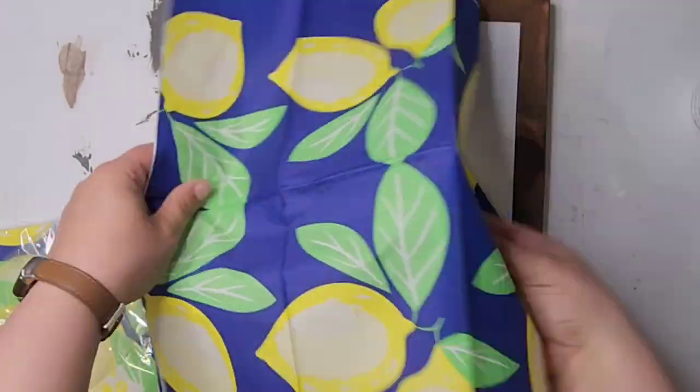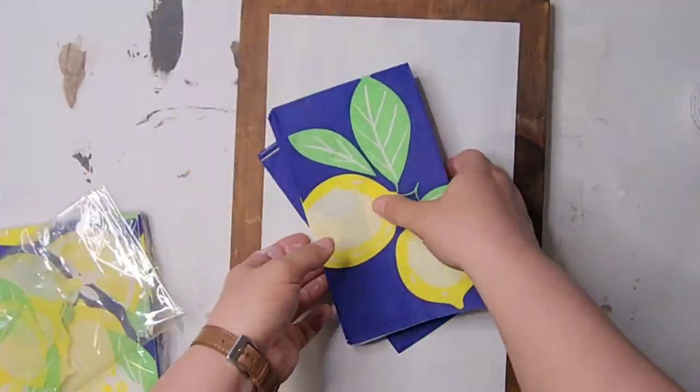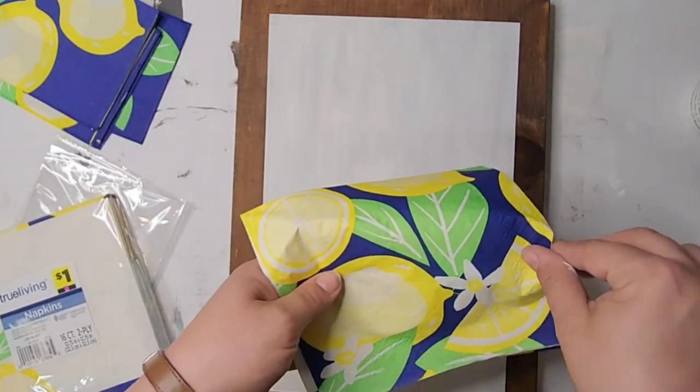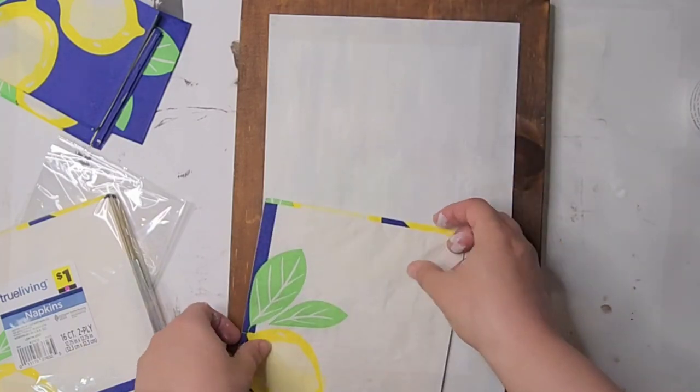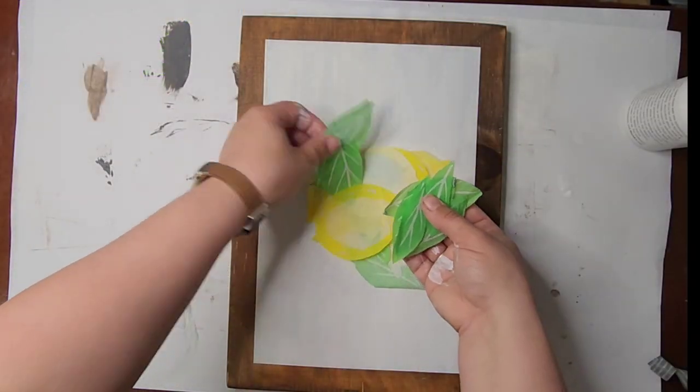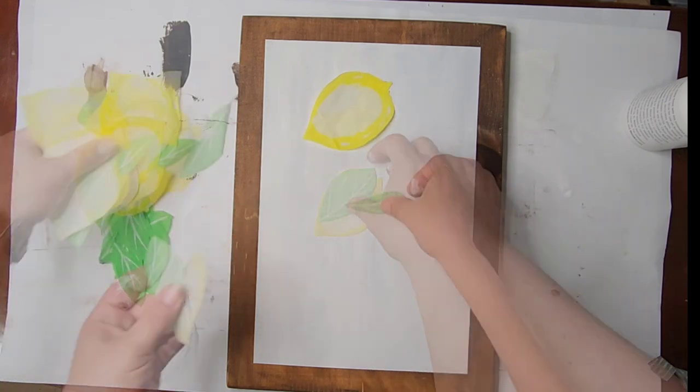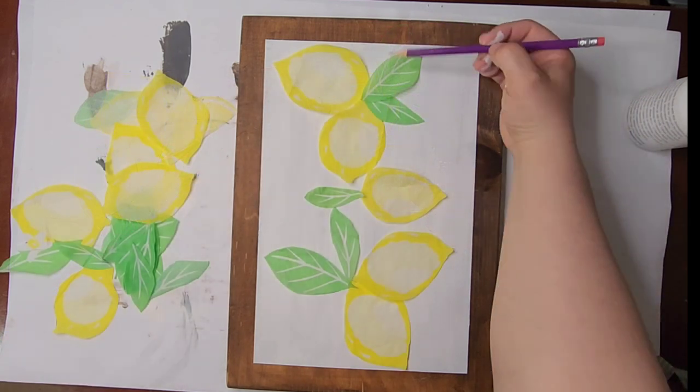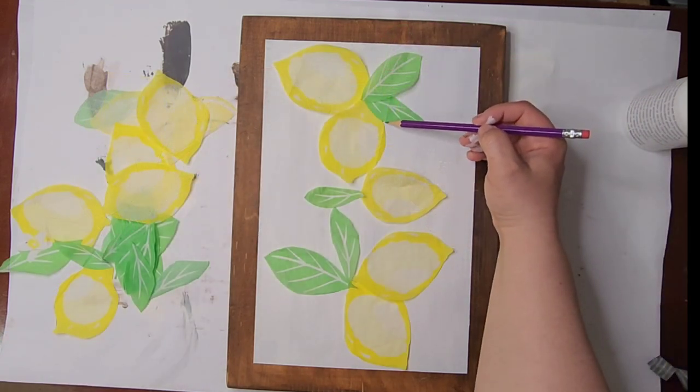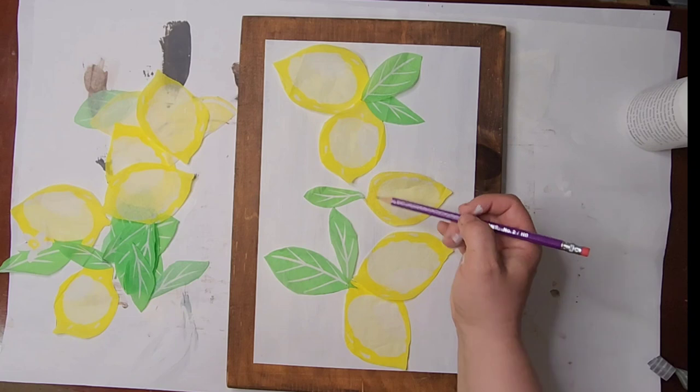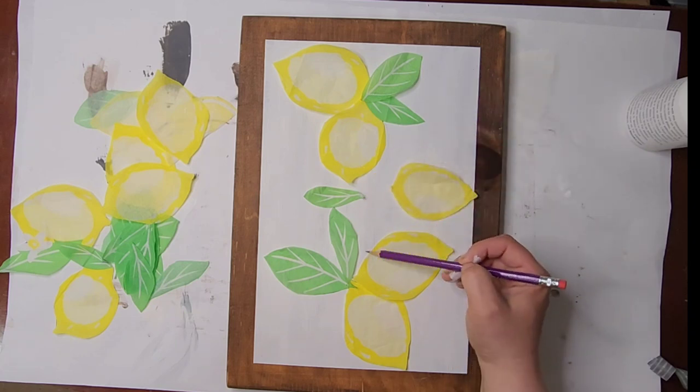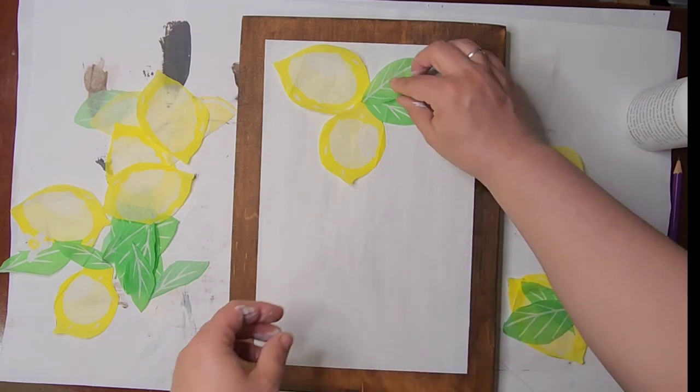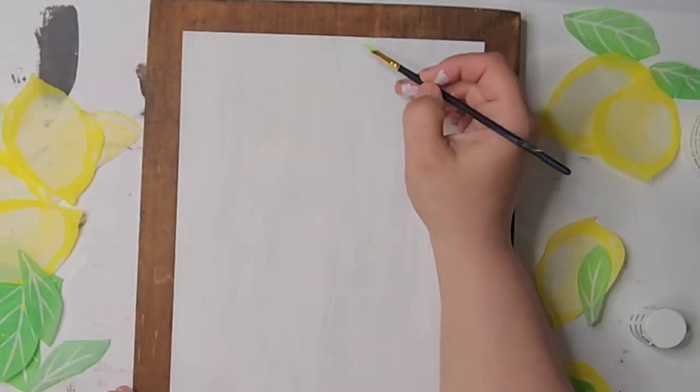I picked up these beautiful lemon napkins at Dollar General. This set was two dollars and this set is a dollar. I went ahead and cut those lemons out and the leaves, and I am now just going to place them on there how I like them. Coming back in with my pencil, I'm drawing a line so I can create the vine to connect all the lemons.